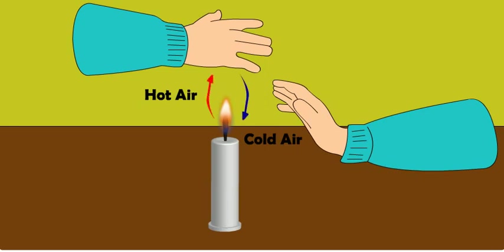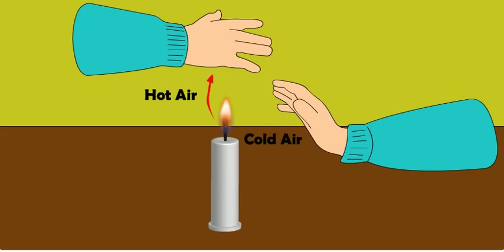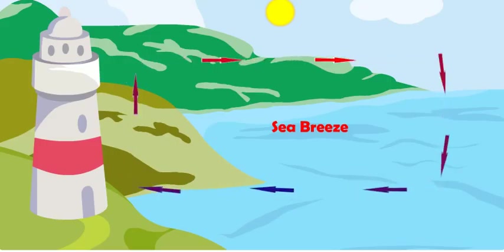Air can transfer heat by convection only in the upward direction, because hot air being lighter rises upwards. Air cannot transfer heat by convection sideways or downward below the source. This means no convection currents of hot air form on the sides of the candle flame, which is why the hand kept on the side of the flame does not feel as hot.